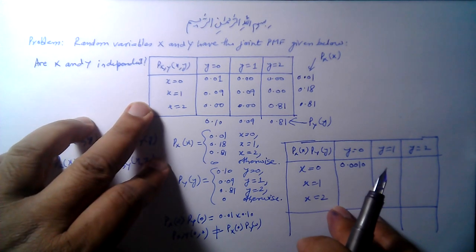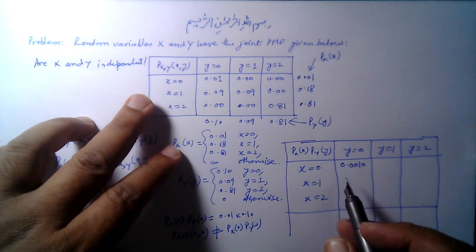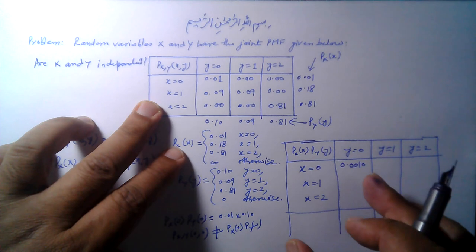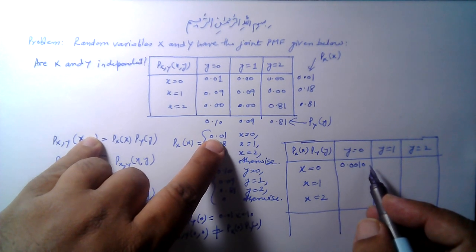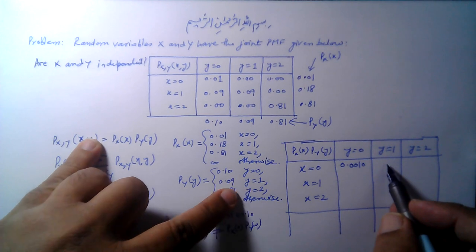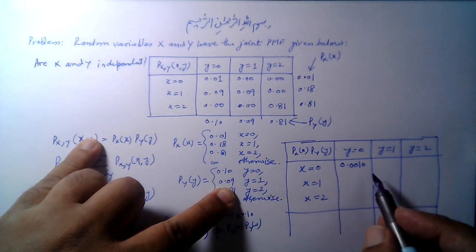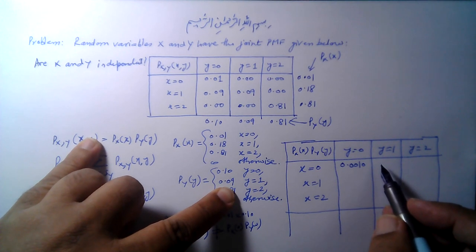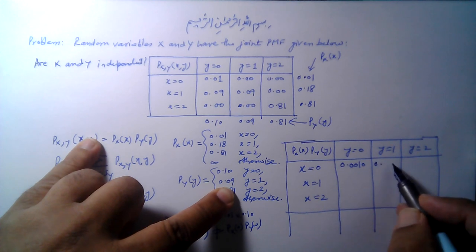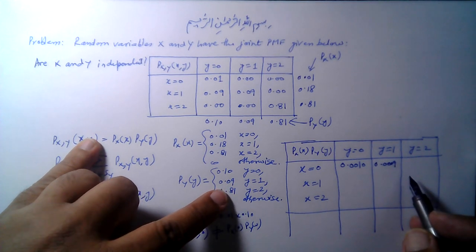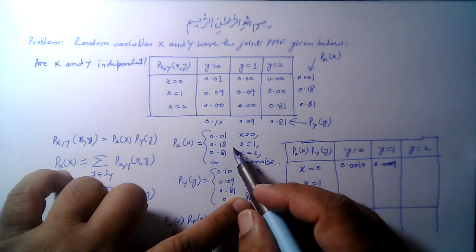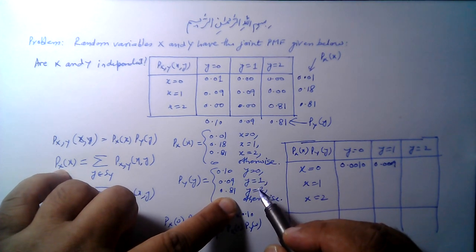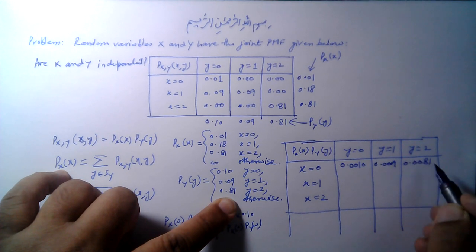For the sake of completeness, let's continue building the table. For X equal to 0 and Y equal to 1: 0.01 × 0.09 = 0.0009. For X equal to 0 and Y equal to 2: 0.01 × 0.81 = 0.0081.